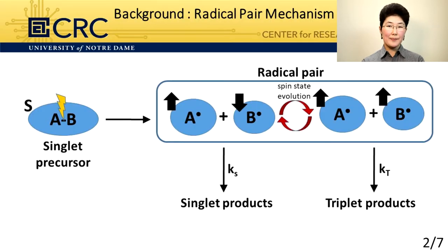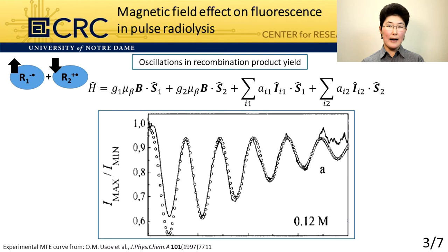In a nutshell, spin-correlated radical pairs formed in radiolysis retain the spin state of their precursor, which is not an eigenstate in the magnetic field. Therefore, they undergo singlet to triplet spin state evolution, which is reflected in the oscillations of the singlet product yield. It is affected by hyperfine couplings and other magnetic interactions — a nice model system for the simulation of the radical pair mechanism with interesting applications in solar energy conversion and biochemistry.